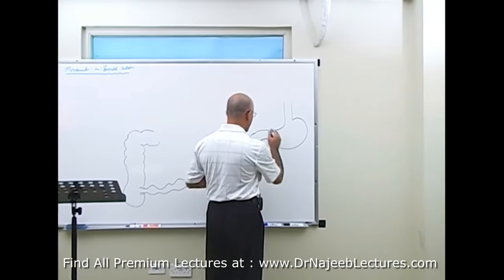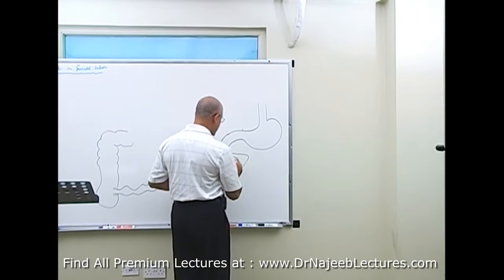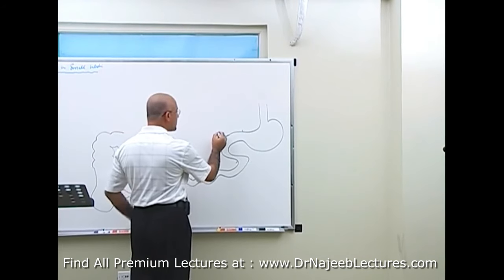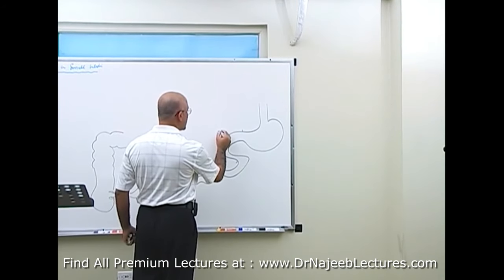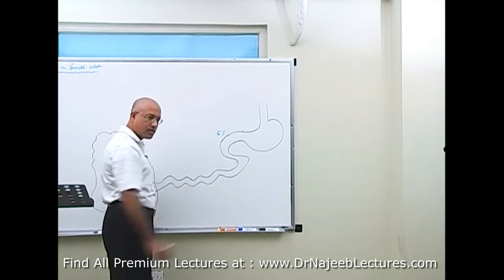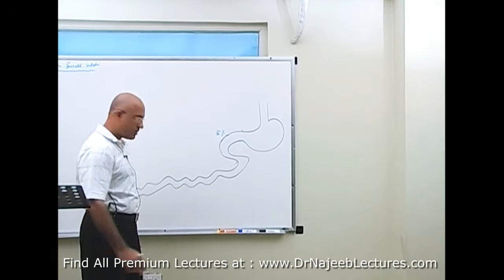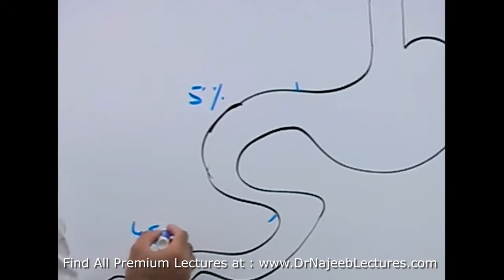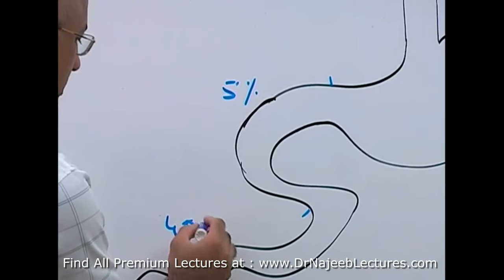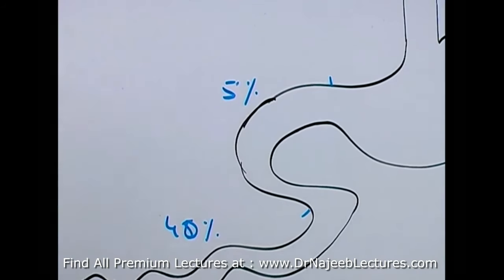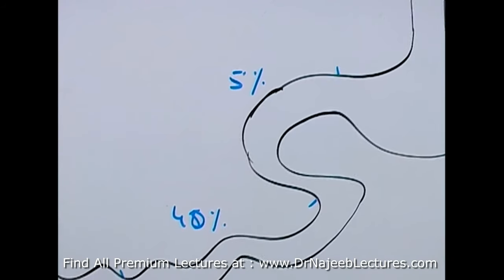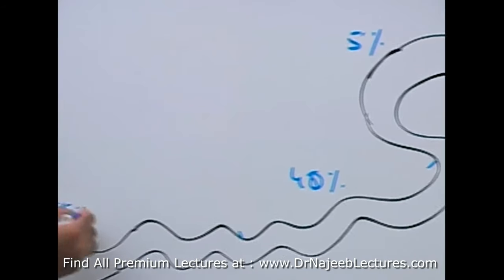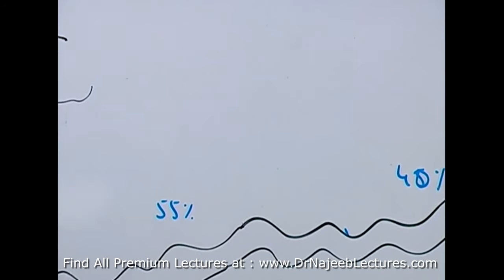Here we have the duodenum, then the jejunum, and then the ileum. About 5% of the small intestine is the duodenum, about 40% is the jejunum, and about 55% is the ileum.